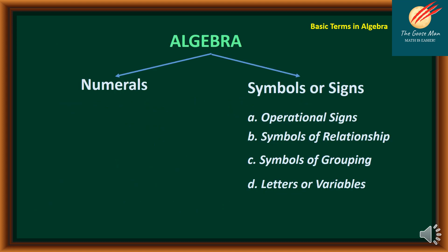The language of algebra is composed of two things: numerals, as well as symbols or signs. Under the symbols or signs, we have operational signs, symbols of relationship, symbols of groupings, and letters or variables.